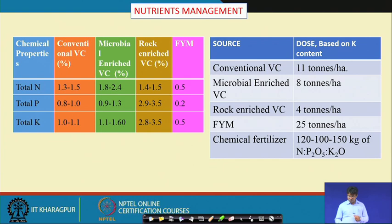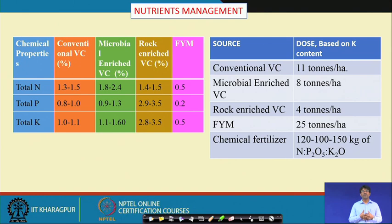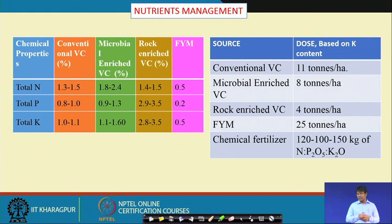Potash helps in disease resistance, drought tolerance, and the swelling and better growth of tubers — so the potash requirement is very high for potato. When calculating organic sources of nutrients, we take potash as the baseline nutrient to decide and quantify the nutrient requirement of the crop. The dose is decided based on the potash content of the organic manure.